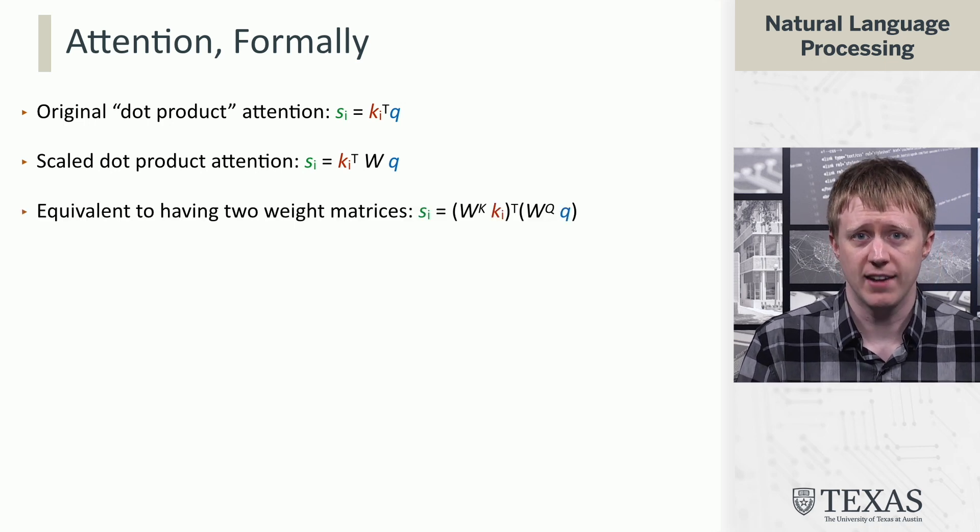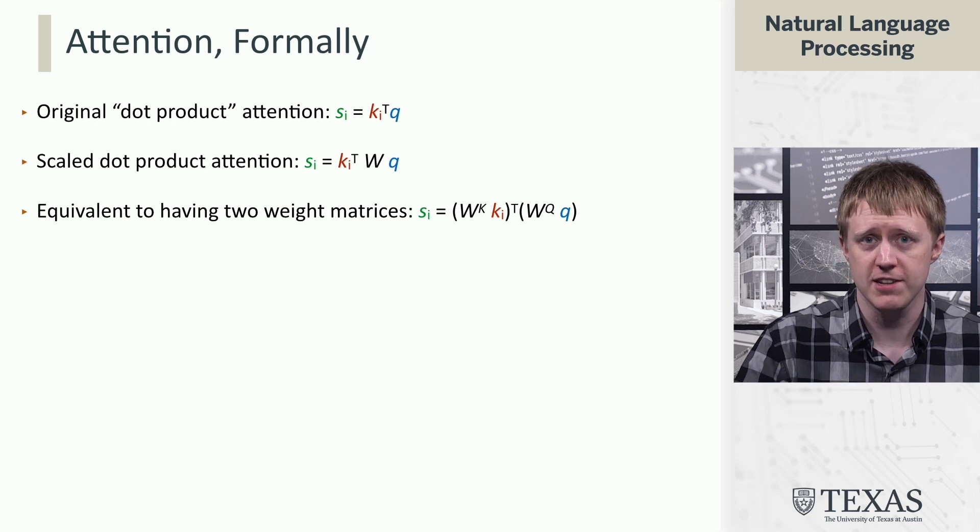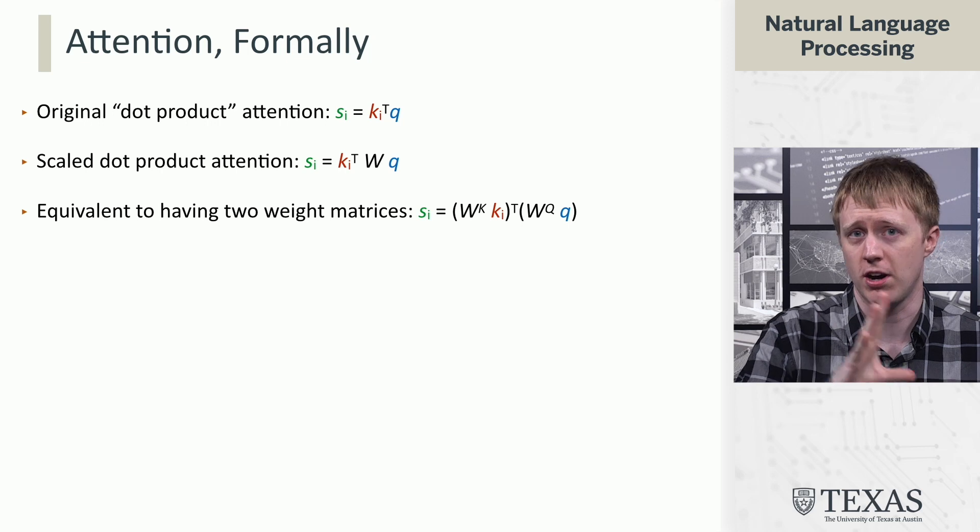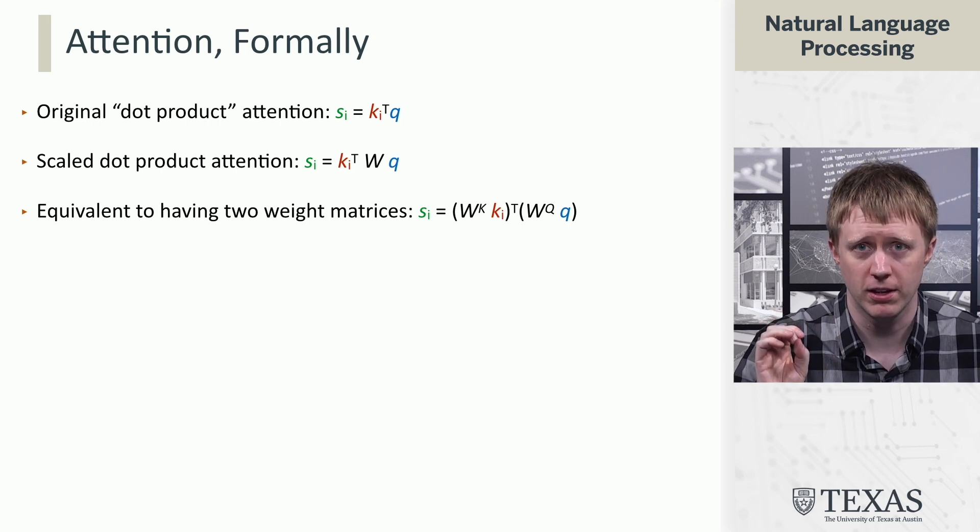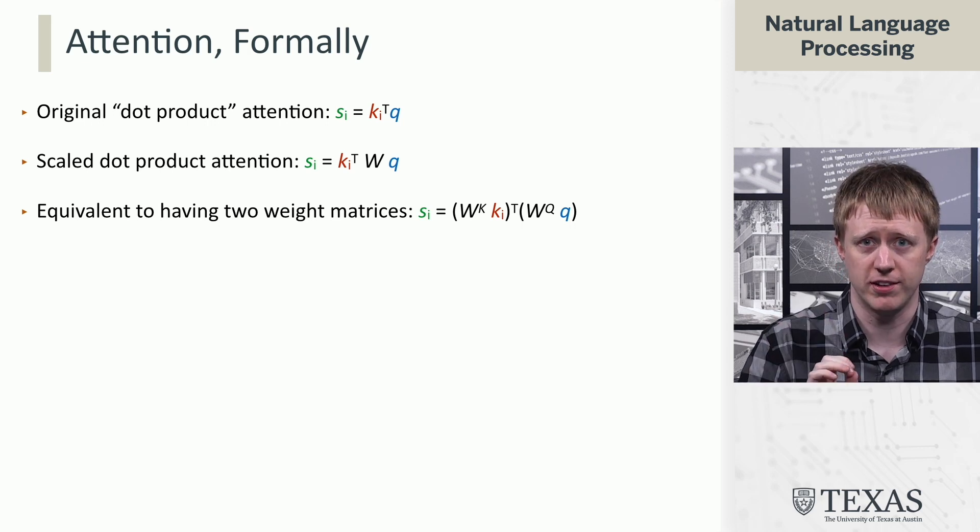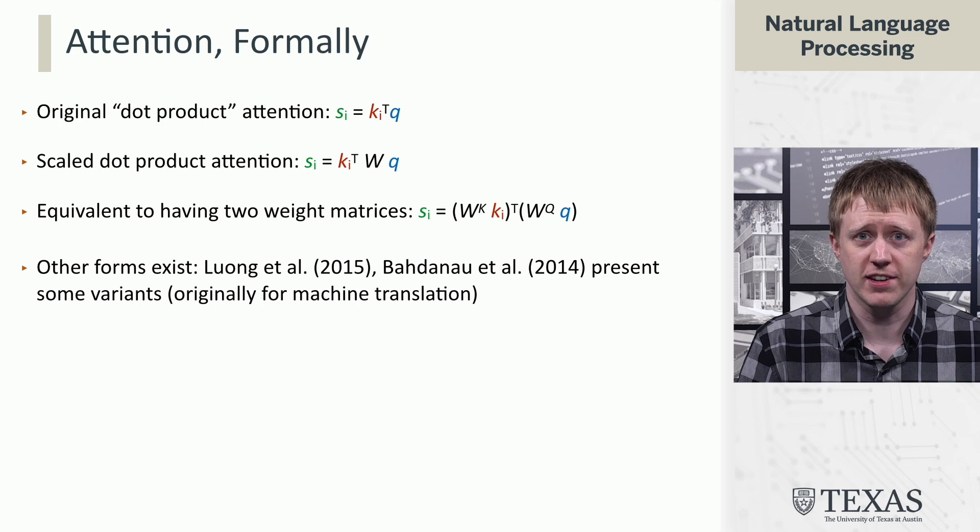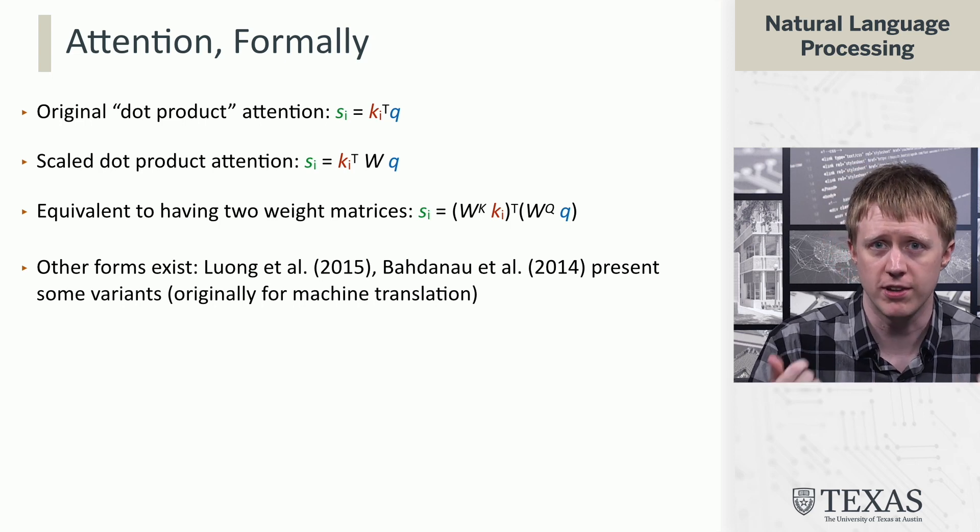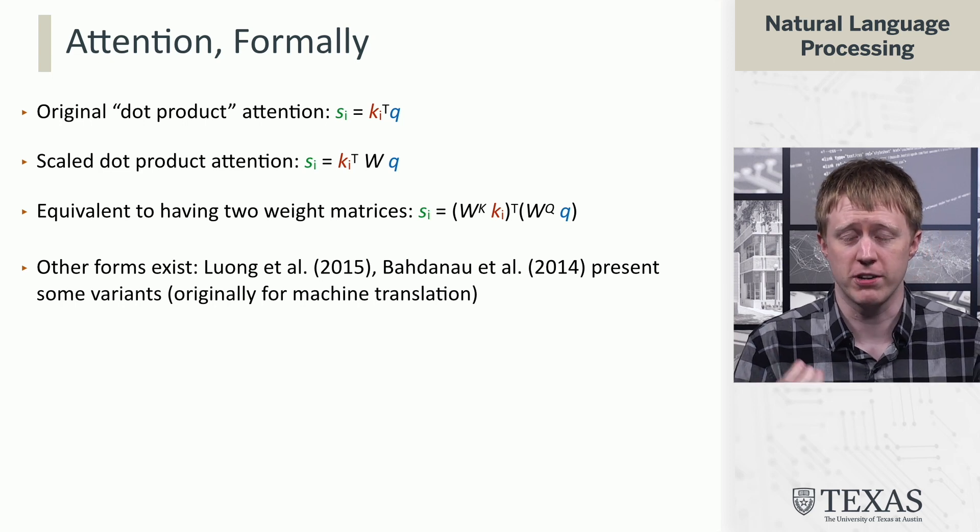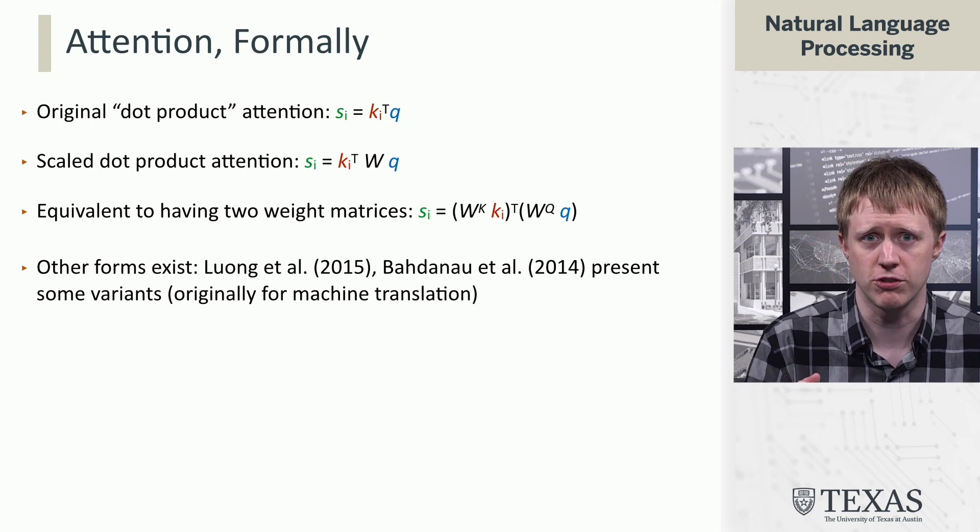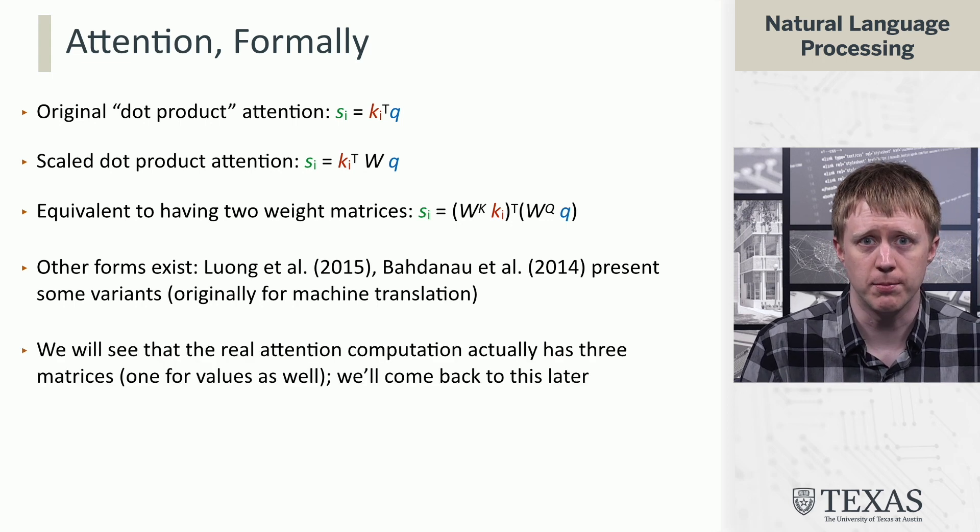And what we're going to see is actually the case in attention, is we multiply the keys by a matrix W_K, which we saw a teaser for on the previous slide. And we're also going to multiply the query Q by a matrix W_Q. And this is a form of attention that is going to get used in basically all the standard transformers. There's other mechanisms for attention that were introduced in settings like machine translation. Some of these older papers talk about them, but we're not really going to use them here.